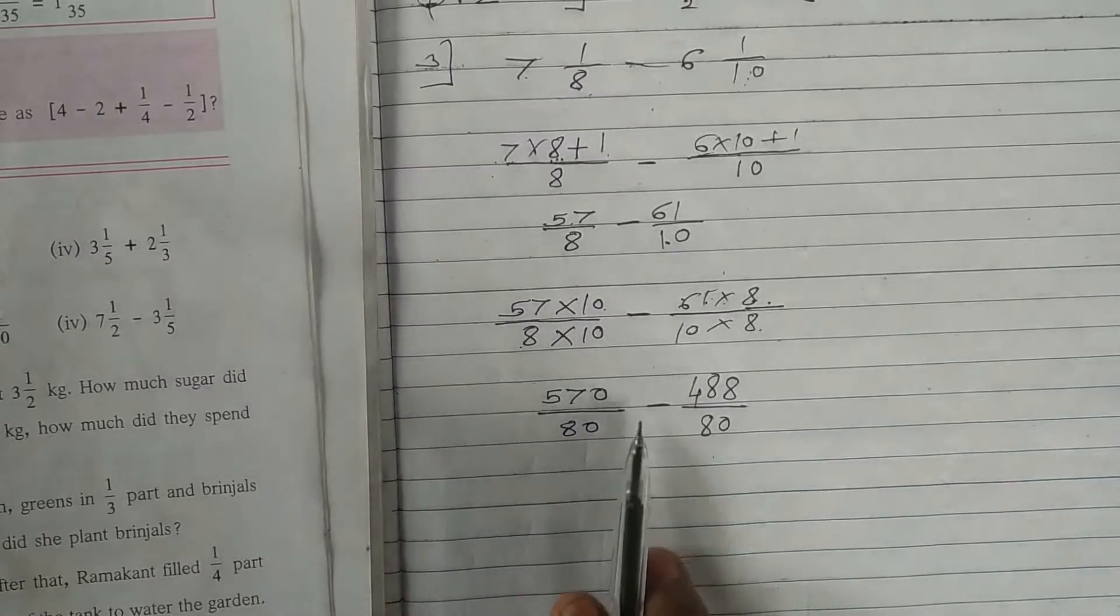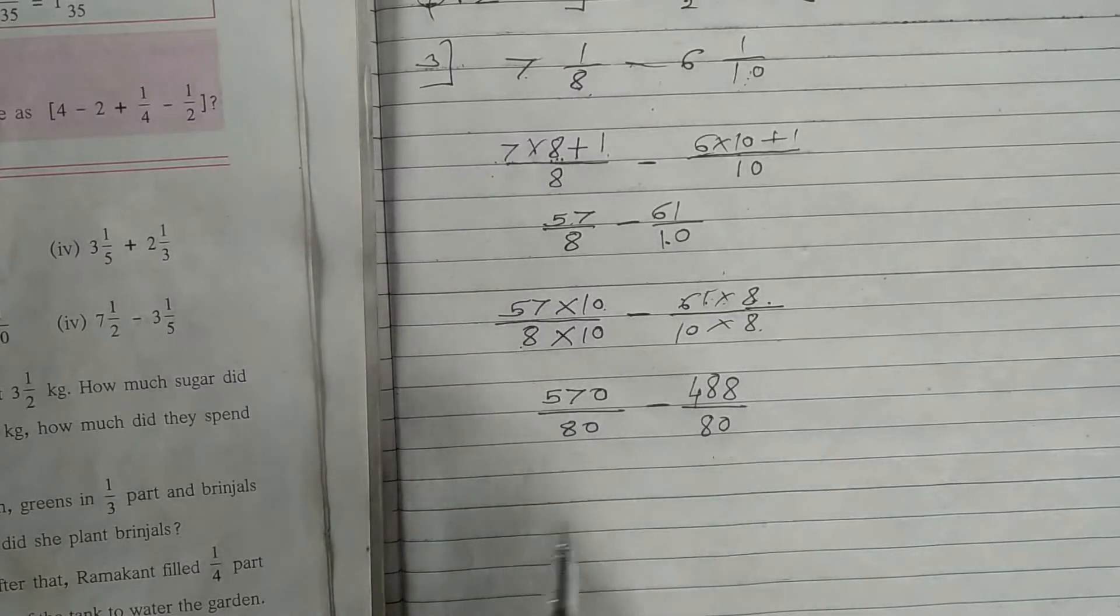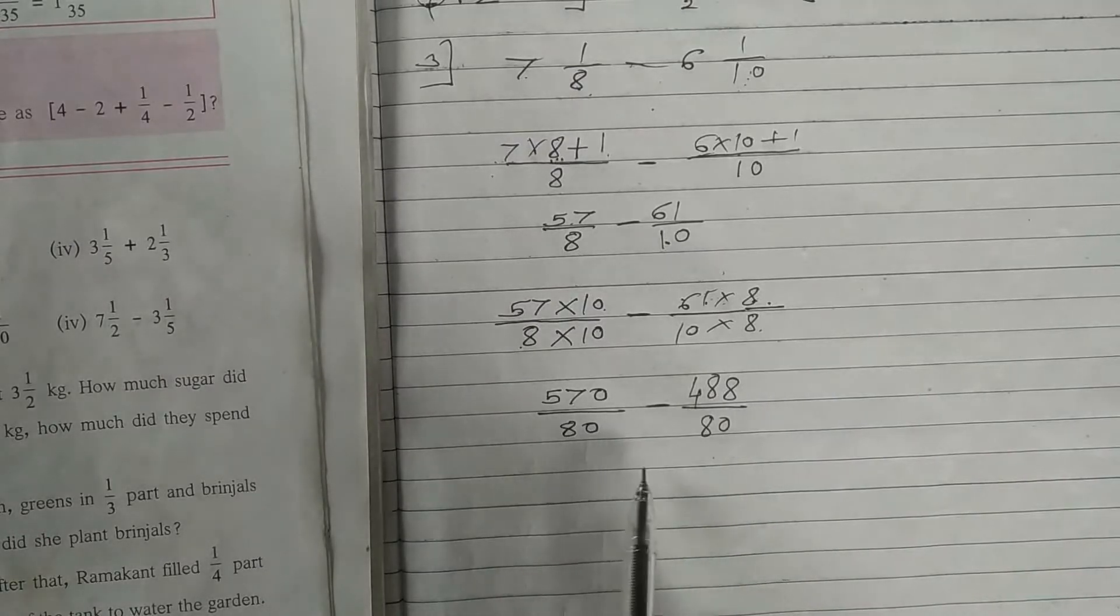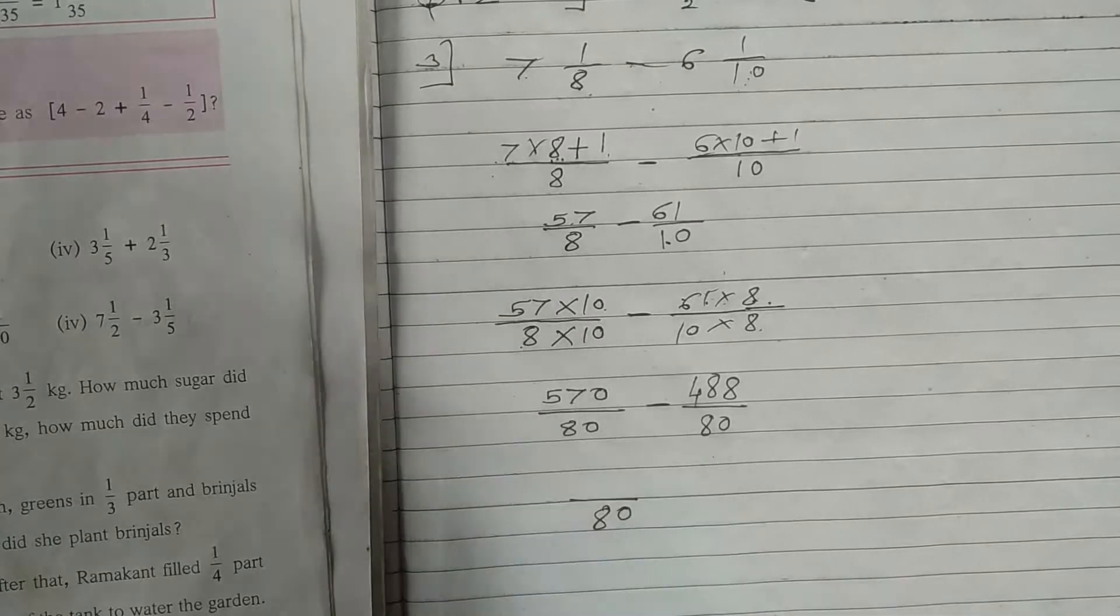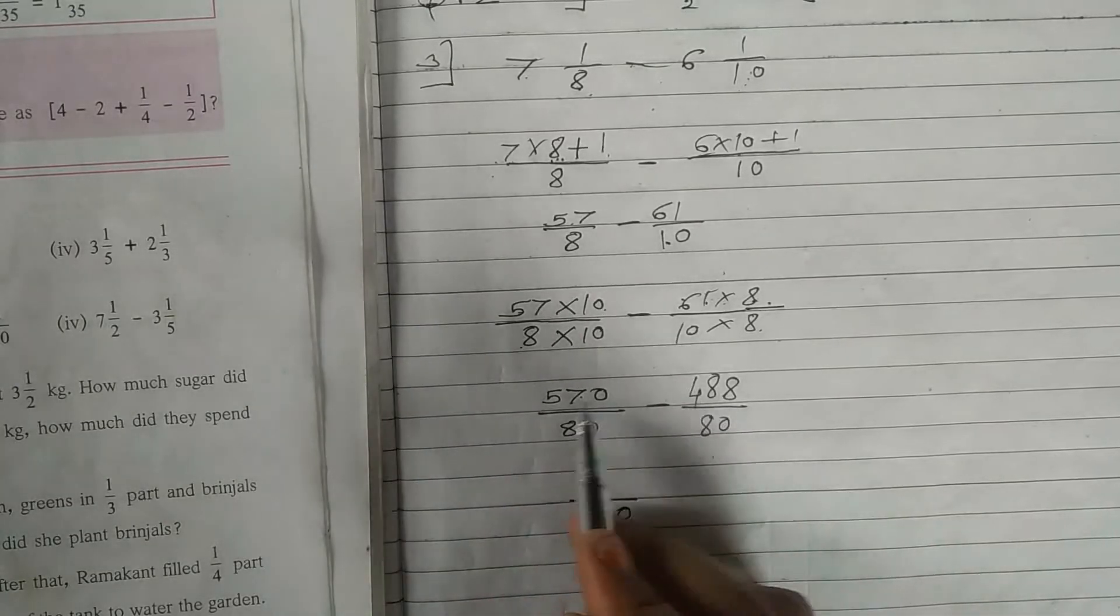So now you can check. You can do this rough work student and cross check. Don't copy as it is. You please solve, understand method. 80 80 base is same. So write down that base as one time only, 80 and now do subtraction.